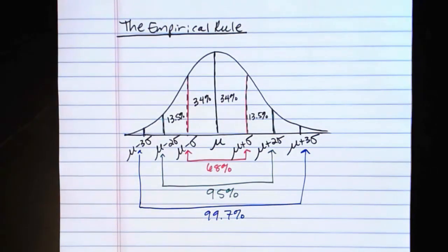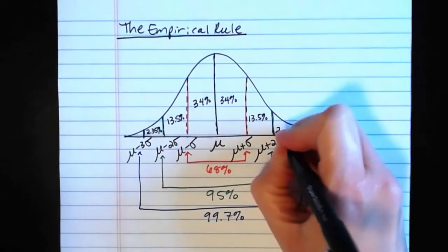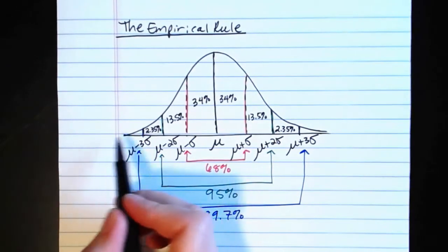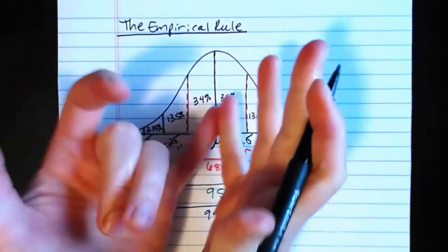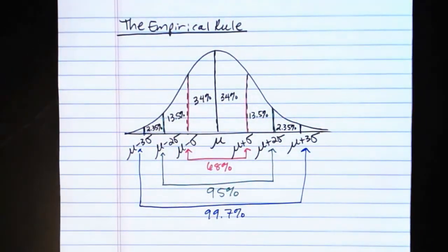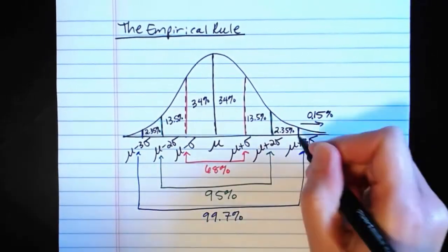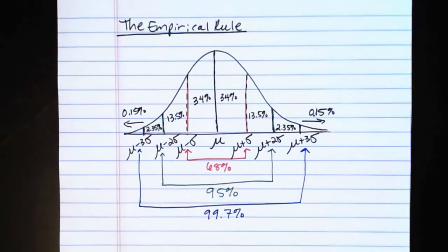We can pull that same trick again: 99.7 minus 95 gives us 4.7, divided by 2. So there's 2.35% in the segment between two and three standard deviations on each side. And all that's out in the tails past three standard deviations in either direction only represents 0.3% of the data, because it's 99.7% out to there. Dividing that in two, we're talking about 0.15% of the data beyond three standard deviations in each direction — very, very minuscule.